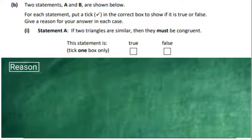So on to part B. We have two questions related to geometry. The questions are about similar triangles and congruent triangles. Let's look at the statement. Two statements A and B are shown below. This is statement A; B is in the next part. For each statement, put a tick in the correct box. Statement A goes as follows: If two triangles are similar, then they are congruent.